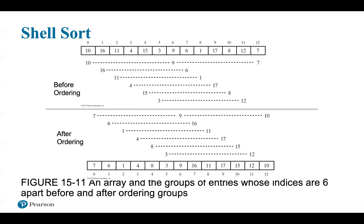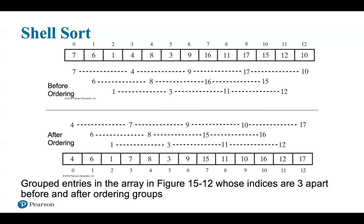For example, Figure 15-11 shows an array and the groups obtained by considering every sixth entry. The first group contains integers 10, 9, and 7; the second group contains 16 and 6, and so on — there are six groups total. We sort each of these six groups separately using an insertion sort. Figure 15-12 shows the sorted groups and the state of the original array as a result, noting that the array is more sorted than it was initially.